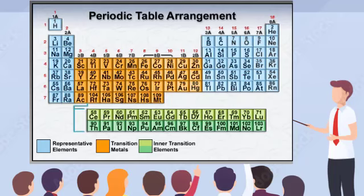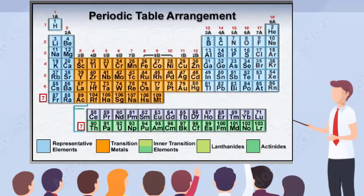The inner transition elements numbered 58 through 71 belong to period 6 and are called the lanthanides because they follow the element lanthanum. The inner transition metals numbered 90 through 103 belong to period 7 and are called actinides after actinium. As you can see from the atomic numbers, these elements belong to the main body of the periodic table. The reason they are generally placed below the main body of the table is to conserve space, allowing the periodic table to fit on a single page.